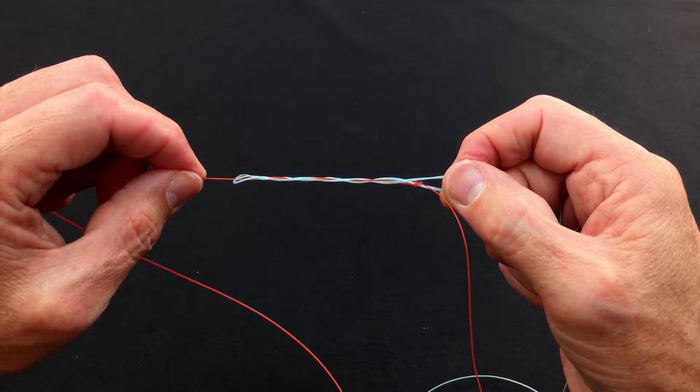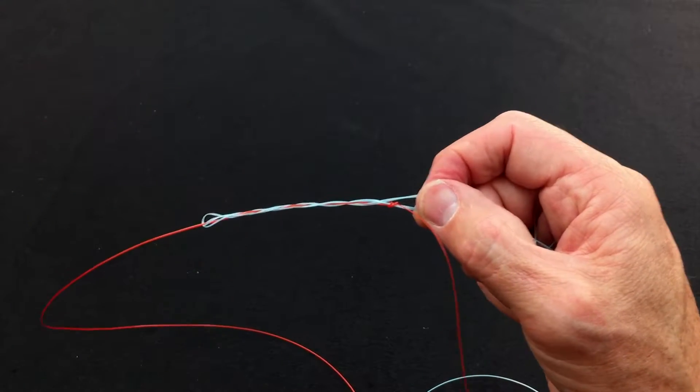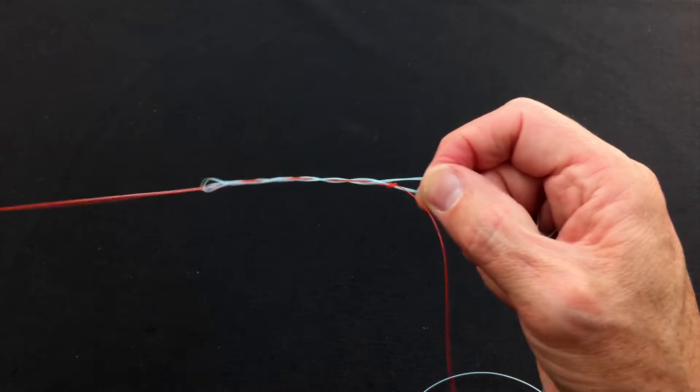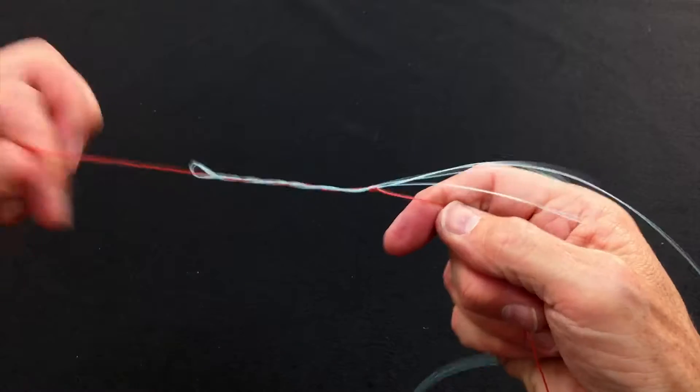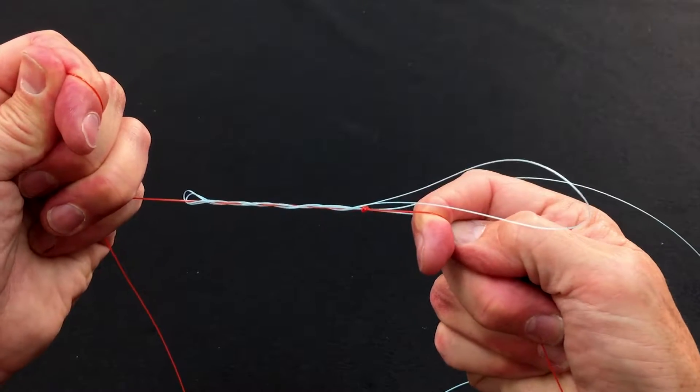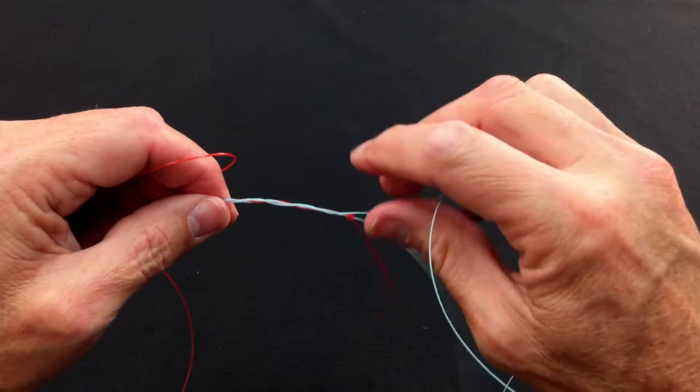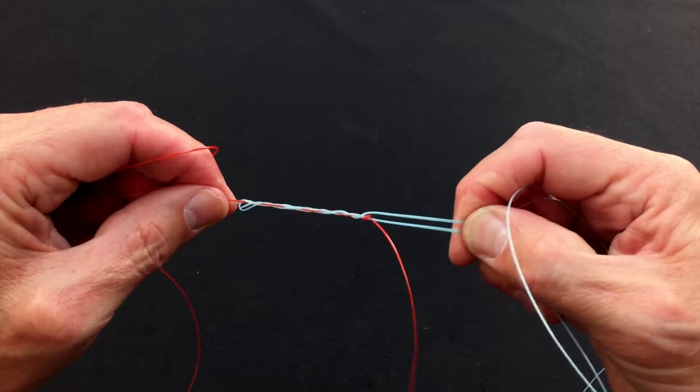So like all knots, of course, what you've got to do is lubricate it. So we get a little moisture on here, chapstick, lick, whatever you like to do, whatever you utilize. And at this stage, I like to pull the figure of eight knot to about 85%, 90% tight at this stage, the red. And then you basically manipulate this thin stuff and just pull it down.